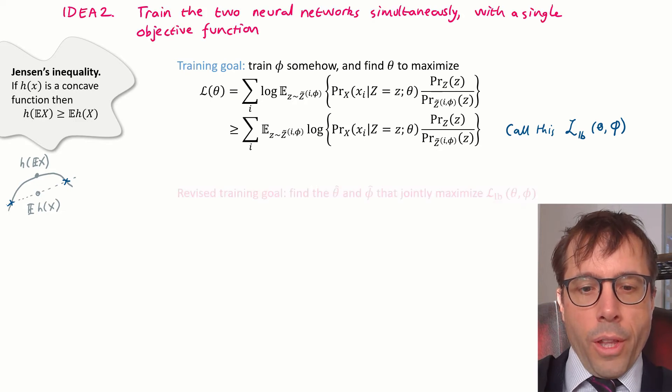So this is our revised goal. We will seek parameters θ and φ to jointly maximize the log likelihood lower bound.